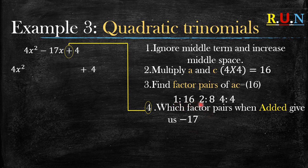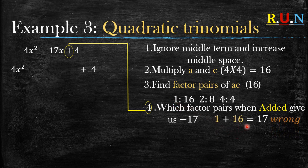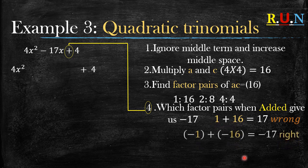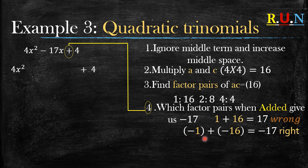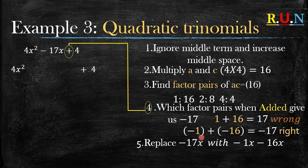Looking at factor pairs: 1 and 16 are close to 17, but 1 plus 16 gives positive 17 — which is wrong, because we need negative 17. So we change 1 to negative 1 and 16 to negative 16. Then negative 1 plus negative 16 gives negative 17 — the answer we're looking for.